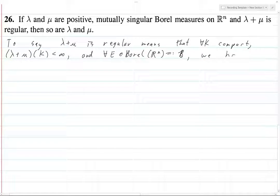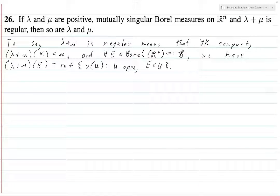We have λ + μ of E equals the infimum for all U, U open and E is contained in U. Now, what this actually says here is to say that all compact sets are finite, and that could also be called locally finite.